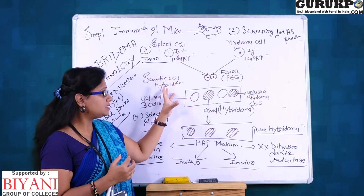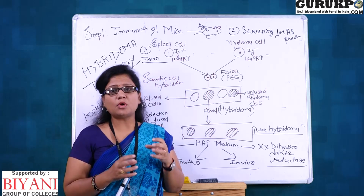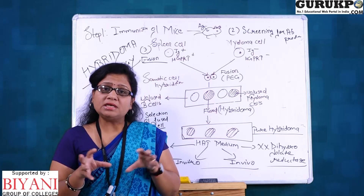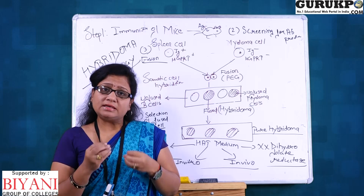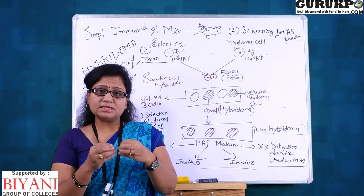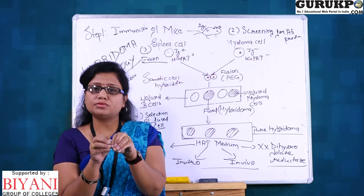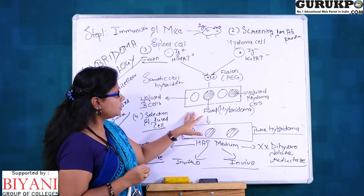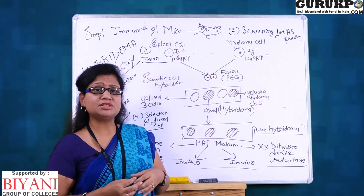The third step: the cells are fused using a technique known as somatic cell hybridization, in which we use PEG — polyethylene glycol. PEG brings the two cell membranes together and allows them to fuse.